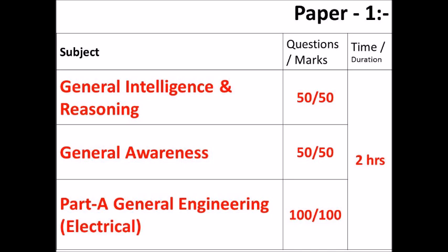Here is Paper 1. It consists of General Intelligence and Reasoning, General Awareness, and Part B — General Engineering, Electrical. General Intelligence and Reasoning: 50 questions for 50 marks. General Awareness also: 50 questions for 50 marks.